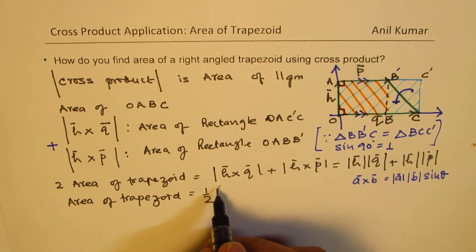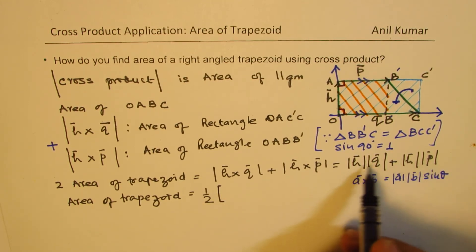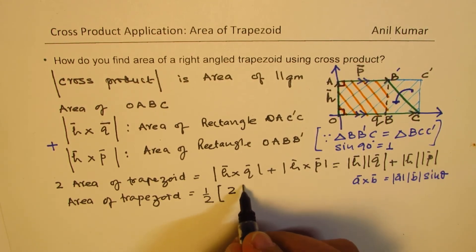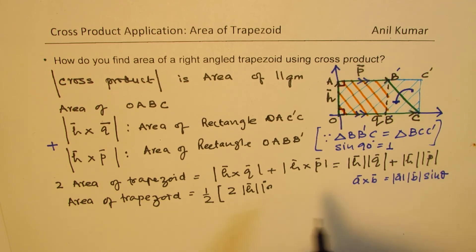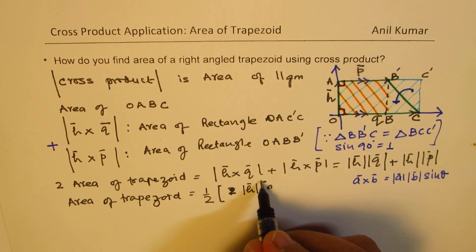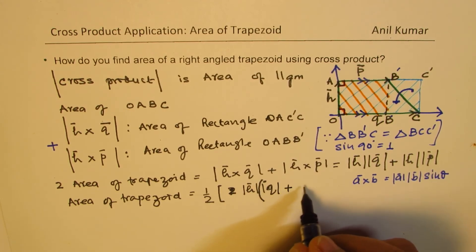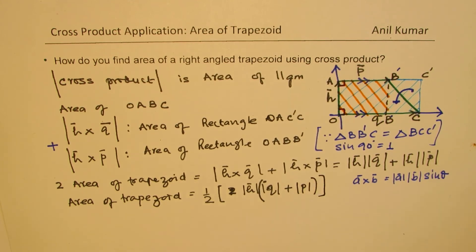So, basically, it is twice the magnitude. If you add these two, we get 2 times magnitude of H times magnitude of within bracket Q plus magnitude of P. Is that clear? So, half of this. So, which is a standard formula, which we can write down here.